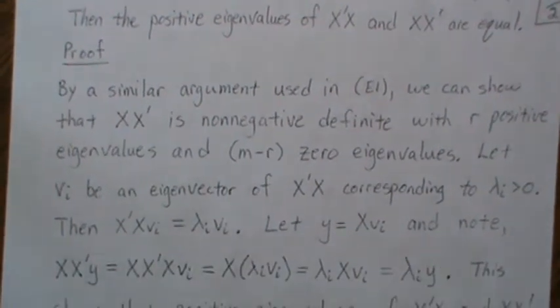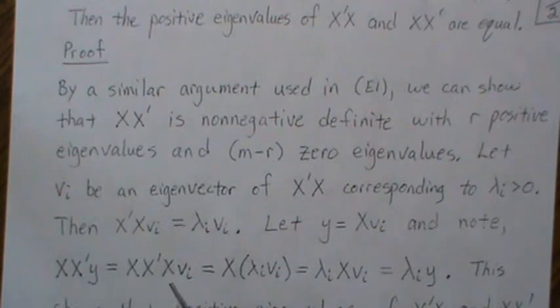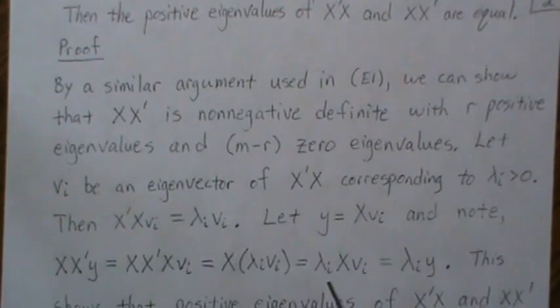And note this: X X prime Y is equal to this, where we put in what Y equals. But notice V_i was an eigenvector for X prime X, so we can replace it with lambda I V_i. Now this is a constant, so it can be brought out front. But X V_i was Y, which is this.